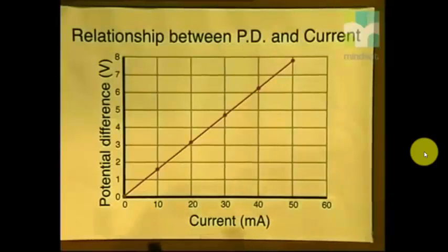Let's now use these results to plot a graph to establish the relationship between potential difference and current. Have a look over here. Here is my graph to show the relationship between potential difference and current. Do you notice that I have plotted the potential difference values on the y-axis and the current values on the x-axis? On each of these axes, I have set up a very clear scale and I have then plotted the points on the graph according to the scale.